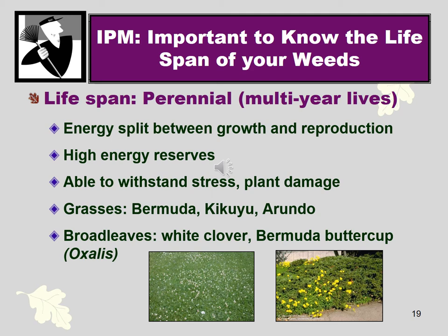There are other plants, including weeds, that are perennials — they live for more than a couple of years, splitting their energy reserves between growth, reproduction, and storing energy in their roots and stems. They can better handle stress because they're bigger and multi-year, handling heat of summer and cool of winter. Bermuda grass, kukuya grass, and Arundo grass are all perennials and are also very big weed problems. Sometimes pulling them out multi-year — or even with Arundo, herbicides are used heavily when trying to eradicate them from waterways like the Ventura River.